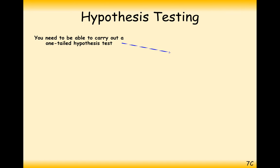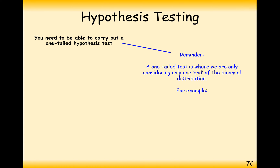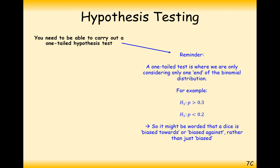For a one-tailed hypothesis test, we need our alternative hypothesis to consider the probability being bigger than or less than our null hypothesis value. In this case we'd only be considering one end of the binomial distribution. We'll come on to two-tailed tests later where we consider both tails of the probability distribution.